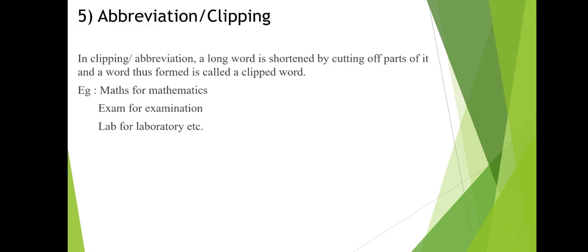The next one is abbreviation or clipping. In clipping or abbreviation, a long word is shortened by cutting off parts of it, and the word that is formed is called a clipped word. You can take a large word and form a smaller word through different types of clipping.